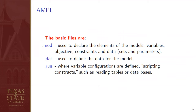There are three basic file types in AMPL. The .mod file is used to declare the elements of the model: variables, objectives, constraints, and data set as parameters. The .dat file defines the data for the model. The .run file is where variable configurations are defined, including constructs such as reading tables and data sets. We'll focus on the most important basic programming instructions for AMPL in this class.